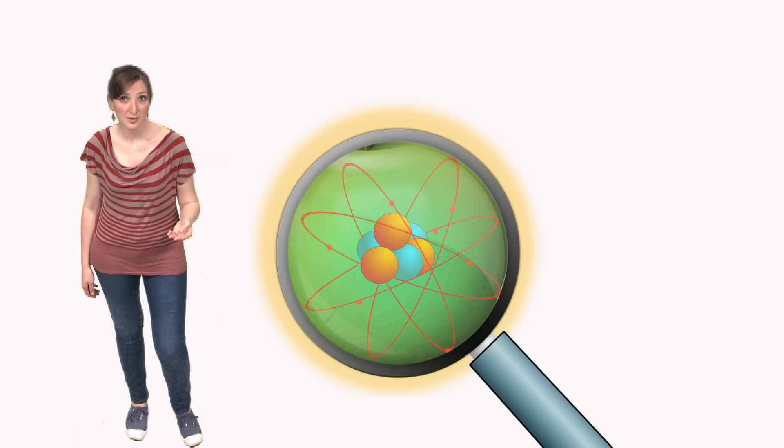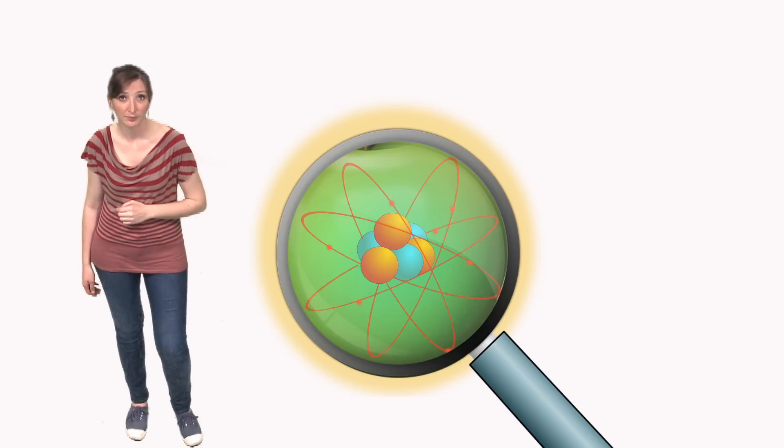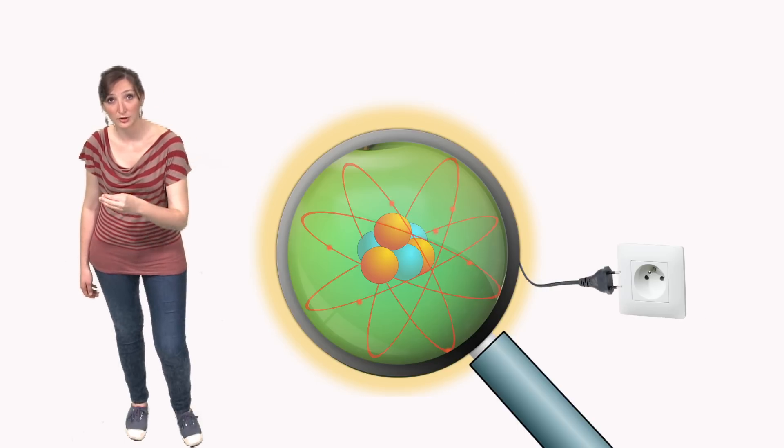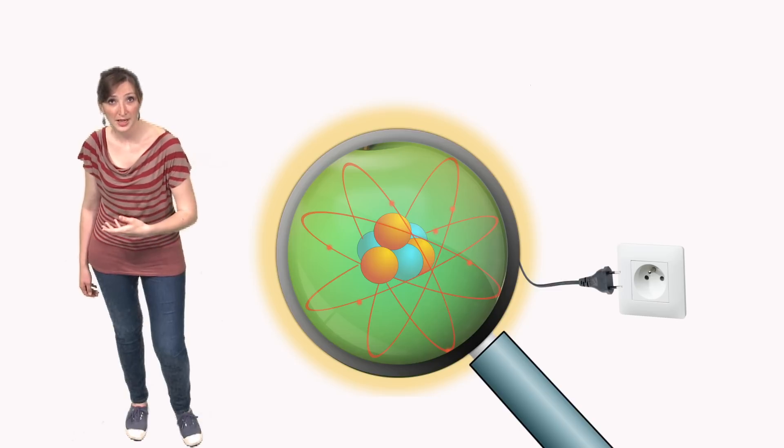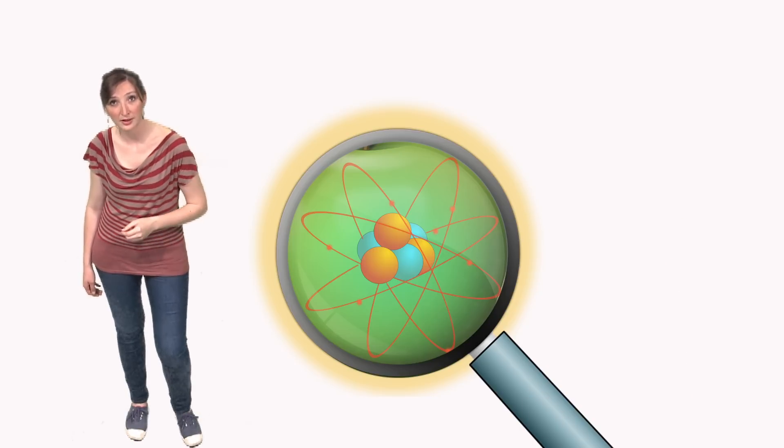When an atom emits a photon, it spends energy, and so this energy must be provided to the atom. Usually, energy is provided to the atom via electricity. But in the case of phosphorescence and fluorescence, the energy is provided in the form of light.